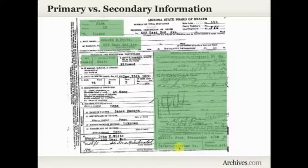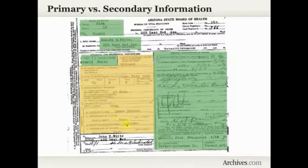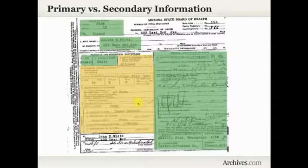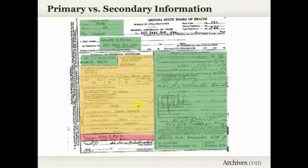But look at how much information on this death certificate is secondary. The person's marital status, the name of their spouse, their birth date, their age, their occupation, information about their birthplace, and their parents — all of this information in yellow, that information about the person other than their death, about their birth, about their parents, is really dependent upon the informant. All of that information about their birth and parents is directly dependent upon the knowledge of that informant.